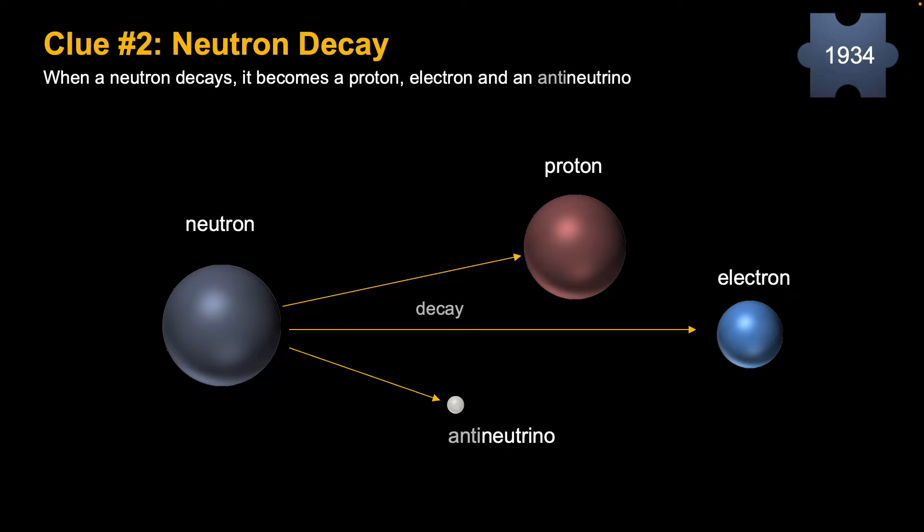Clue number two. When a free neutron decays, it becomes other particles. In the neutron's case, a proton, an electron, and a neutrino, an anti-neutrino to be exact, they are found as remnants. So the neutron disappears and three new particles emerge.